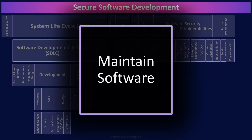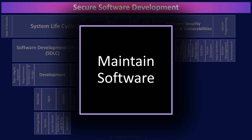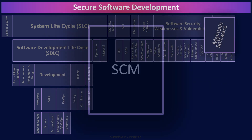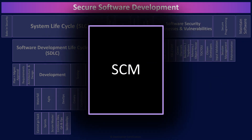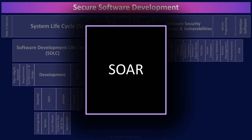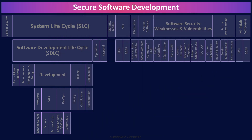A couple of types of tools you should be aware of that are used to maintain software in operation: SCM — software configuration management tools — are used to track and control changes to software. And security orchestration automation and response (SOAR) software is used to automate security operations, including threat and vulnerability management and incident response.